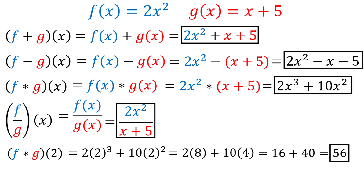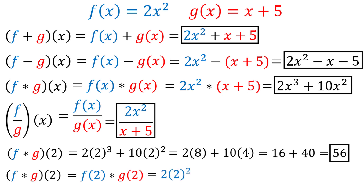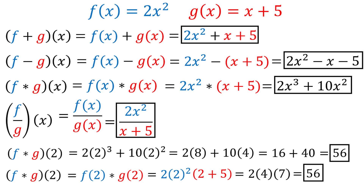An alternative way to evaluate f times g of 2, which you might use if you didn't already have the functions multiplied, is to find f(2) and g(2) and then multiply them together. f(2) = 2(2²) = 8 and g(2) = 2 + 5 = 7. This simplifies to 8 × 7 = 56 — the same answer we got when we plugged into f times g of 2.